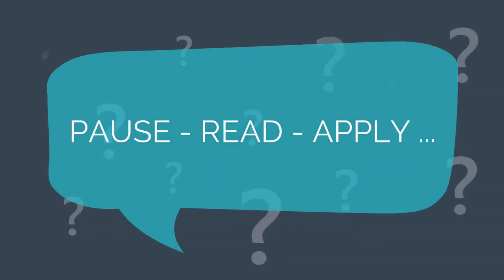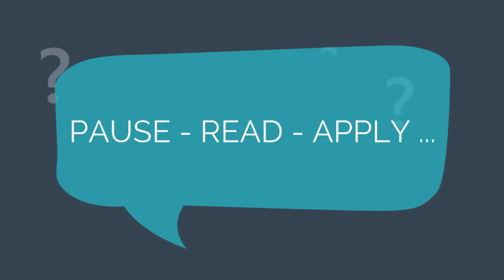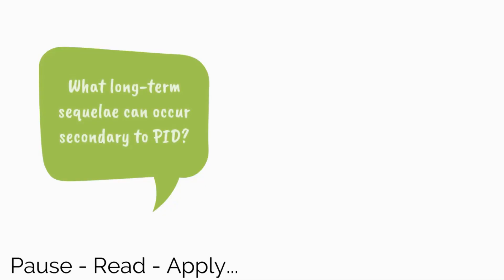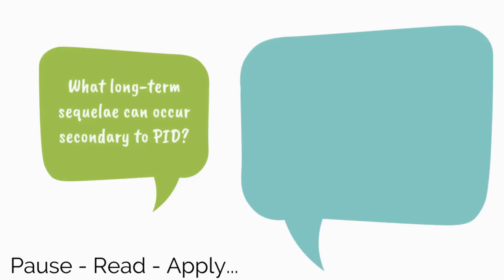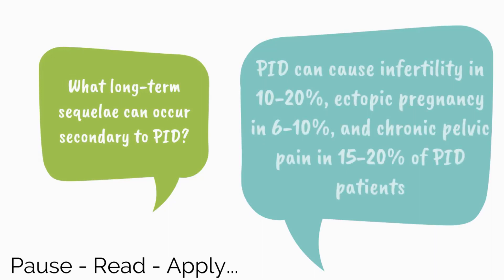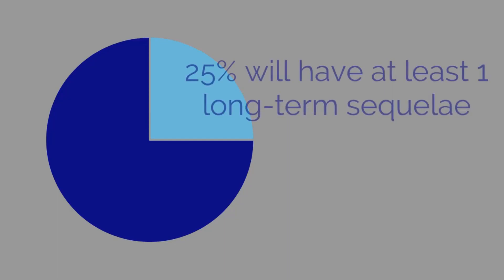Let's pause, read, and apply. What long-term sequelae can occur secondary to PID? PID can cause infertility in 10–20%, ectopic pregnancy in 6–10%, and chronic pelvic pain in 15–20% of PID patients. 25% of PID patients will have at least one of these sequelae.